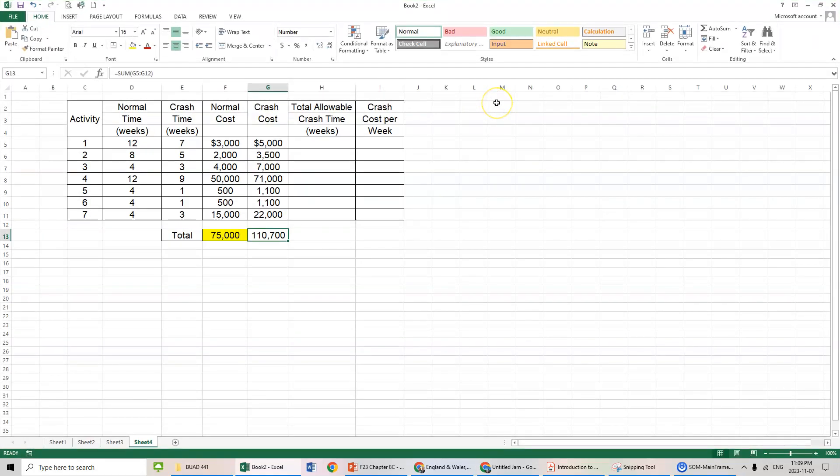Let's go back to Excel. We're going to get those numbers. The total allowable crash time is simply the difference between the normal time and the crash time. Basically, we can crash Activity 1 by 5 weeks. The bare minimum, we can only crash down to 7 weeks. We can't shorten it anymore. Activity 7 can only be shortened by one week. There's a maximum time or minimum time that each activity has to take. The crash cost per week is looking at the difference between the crash cost and the total normal cost divided by the total allowable time. That's $400. We can drag that down and we get the crash cost per week.